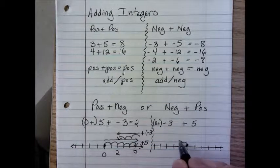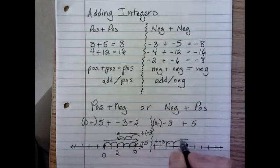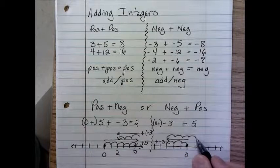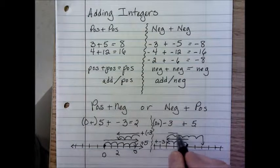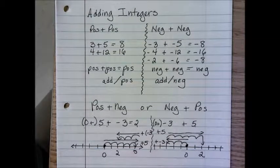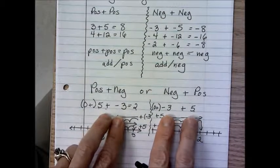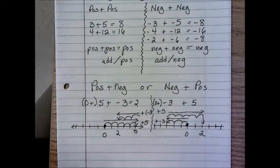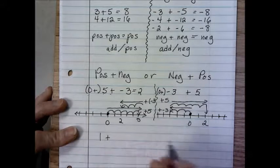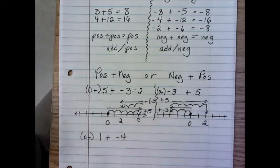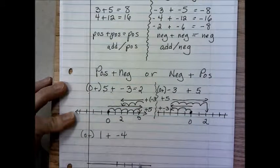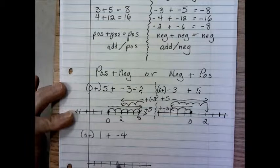Now let's reverse the terms and put negative 3 first, then add 5 — will that change the outcome? Starting at zero, negative 3 means going to the left. Then adding positive 5 means going one, two, three, four, five to the right, and I wind up right back at 2. The commutative property states that order does not matter when you're adding.